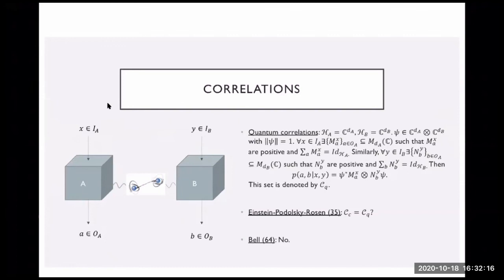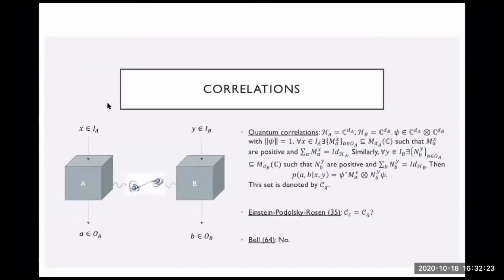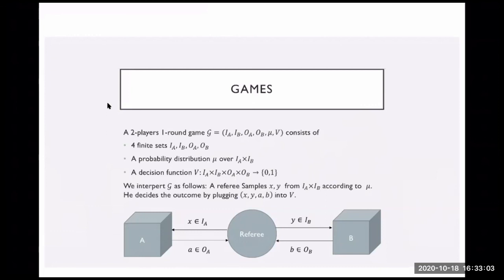To distinguish between two convex sets, one usually finds a linear functional that separates them — a hypersurface distinguishing the two sets. We want to generate a functional that separates these two sets. The way we generate such a functional is to think of some game played with these boxes. Let's define what the game is.